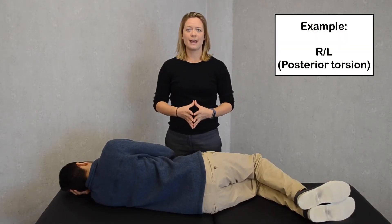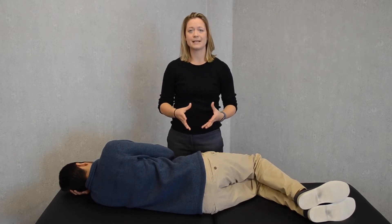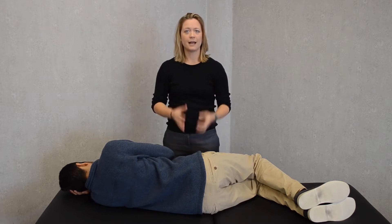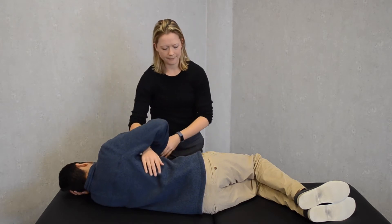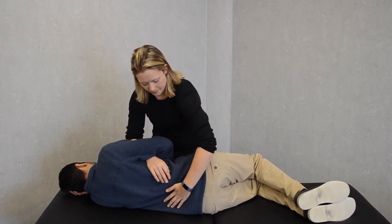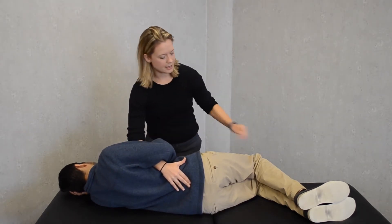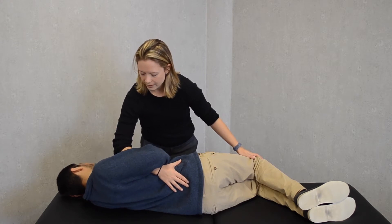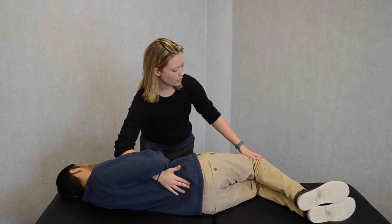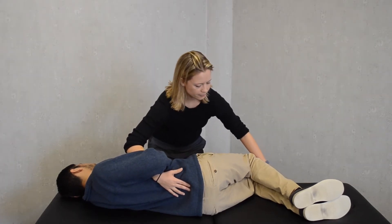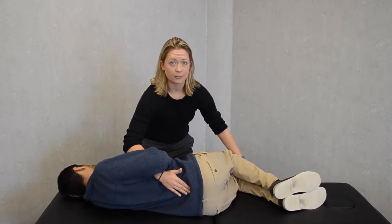Next we will treat a right on left sacral dysfunction. Again, deep side down — Rohan is on his left side. We'll find the sacral base in a similar way, palpating and finding that right sacral base. Again, we'll engage the rotational axis by rolling his left shoulder back toward the table.